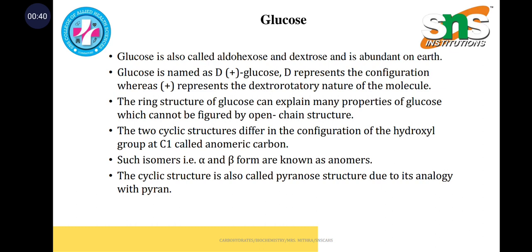The two cyclic structures differ in the configuration of the hydroxyl group at C1, which is termed as the anomeric carbon. Such isomers, that is the alpha and beta forms, are known as anomers. The cyclic structure is called pyranose structure due to its analogy.